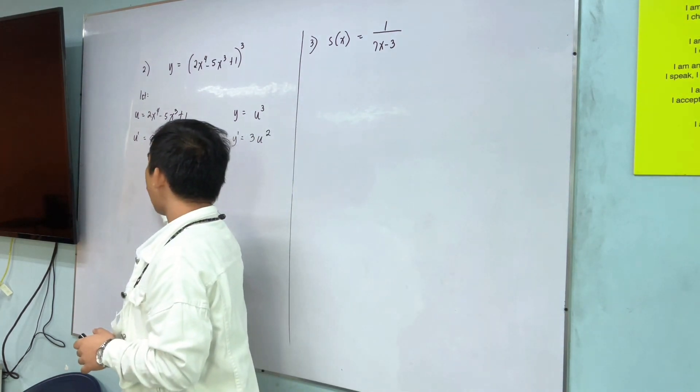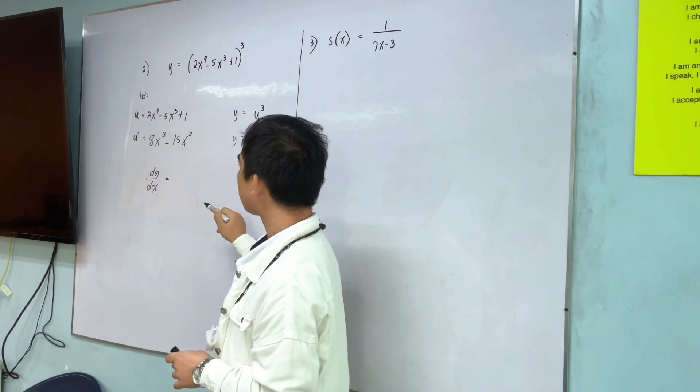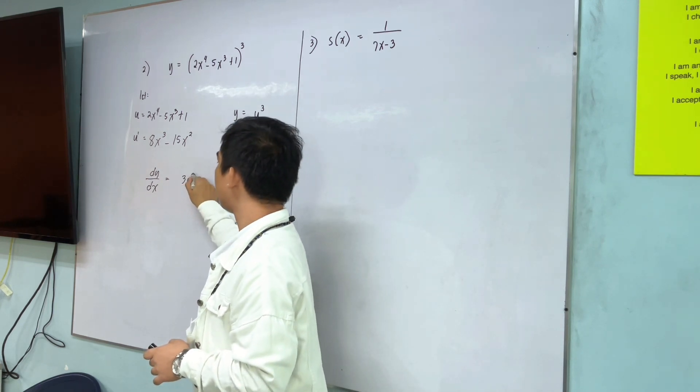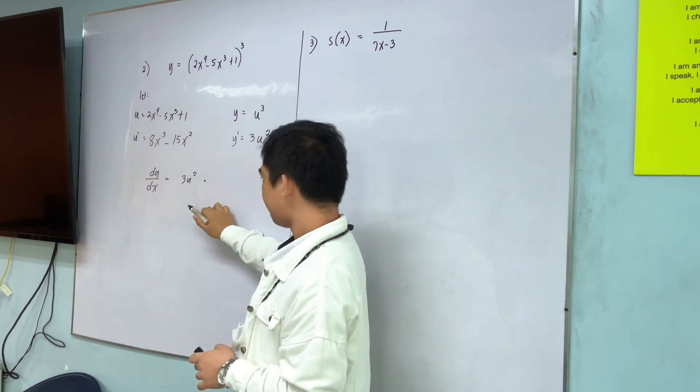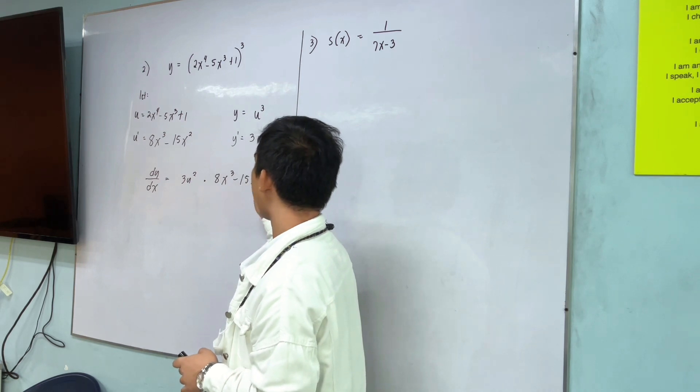So, dy over dx is equal to? Multiply na natin. 3u squared, 3u squared times 8x cubed minus 15x squared.